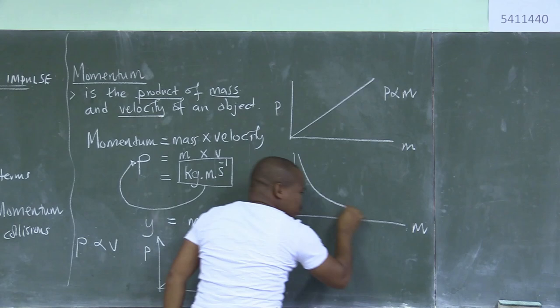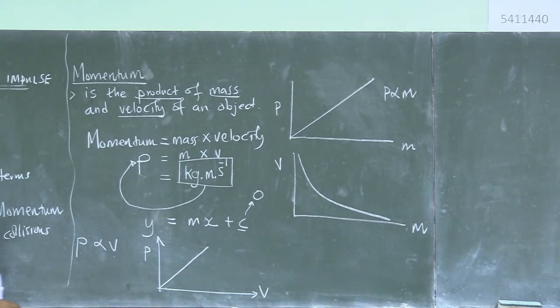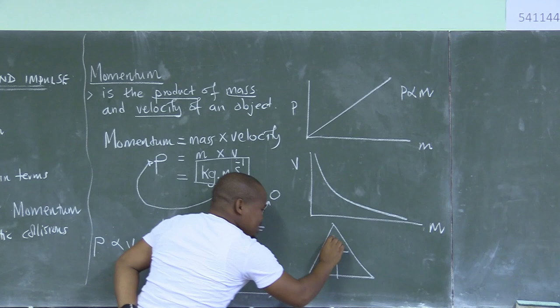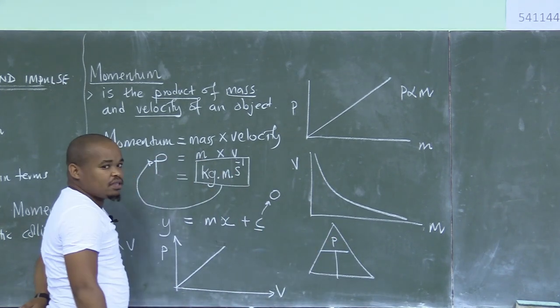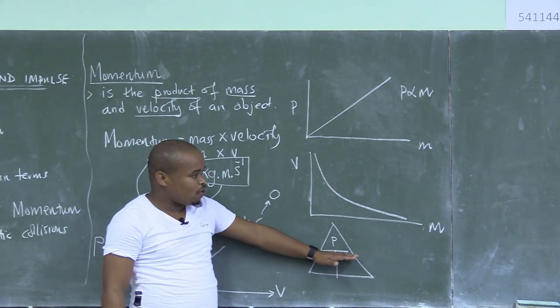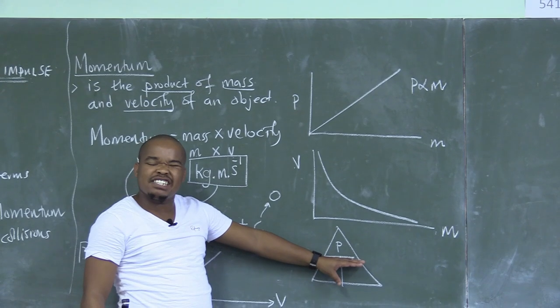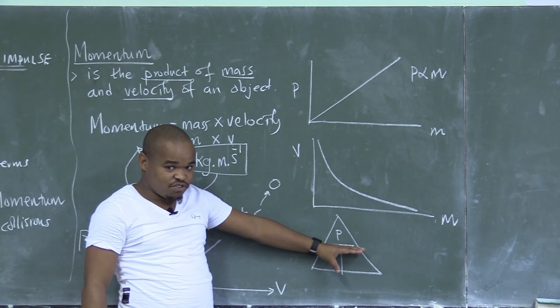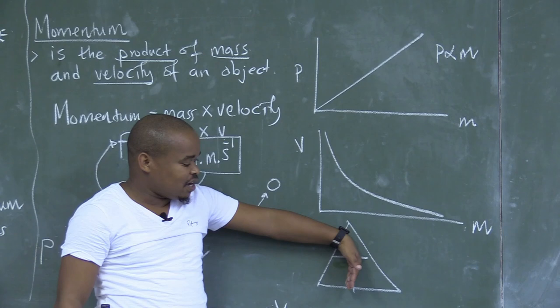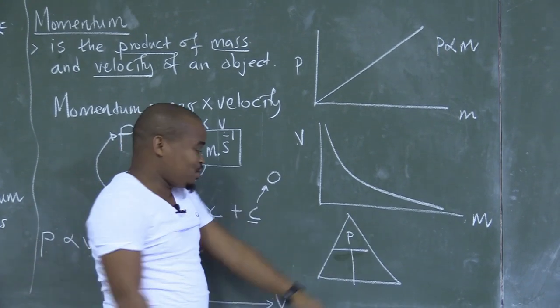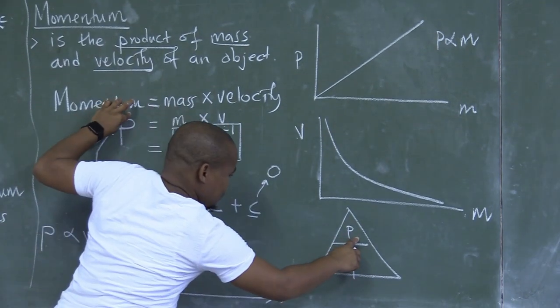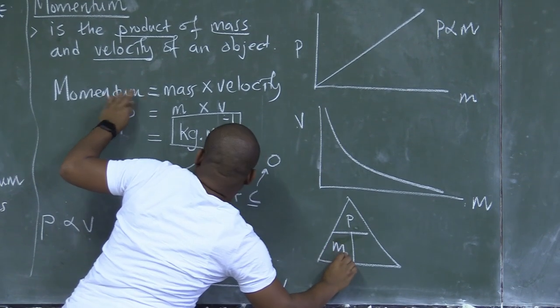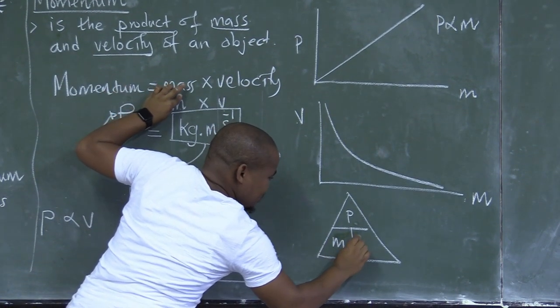I am going to have a different function that will be produced. The horizontal line indicates division and the vertical line indicates multiplication. So P is equal to M times V.